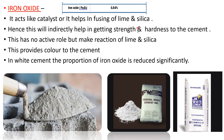Iron oxide has no active role but facilitates the reaction of lime and silica, indirectly helping in getting strength and hardness to the cement. Importantly, iron oxide provides the gray color to the cement. For white cement production, since we don't want any gray color, the proportion of iron oxide is reduced significantly — that is how white cement is produced.